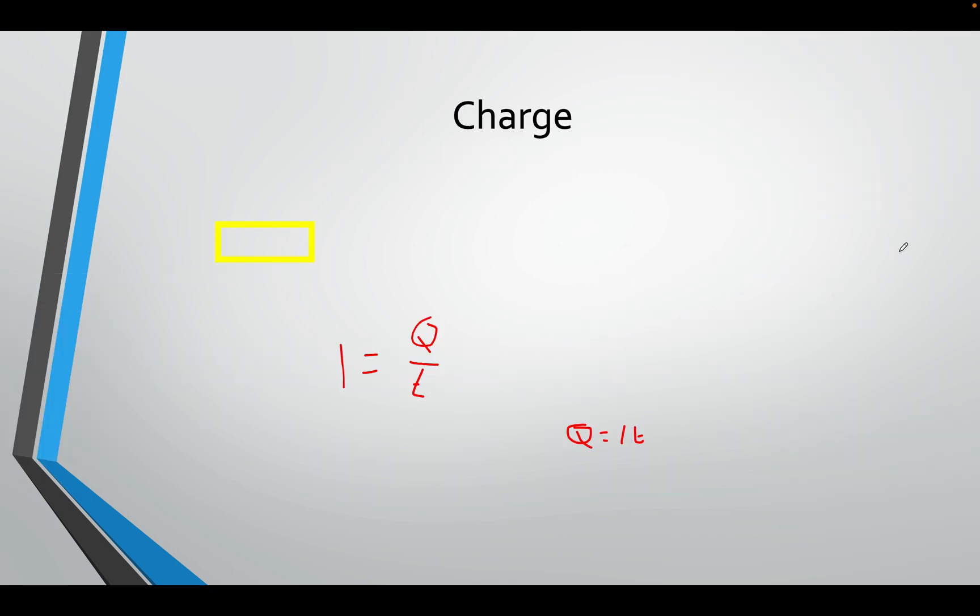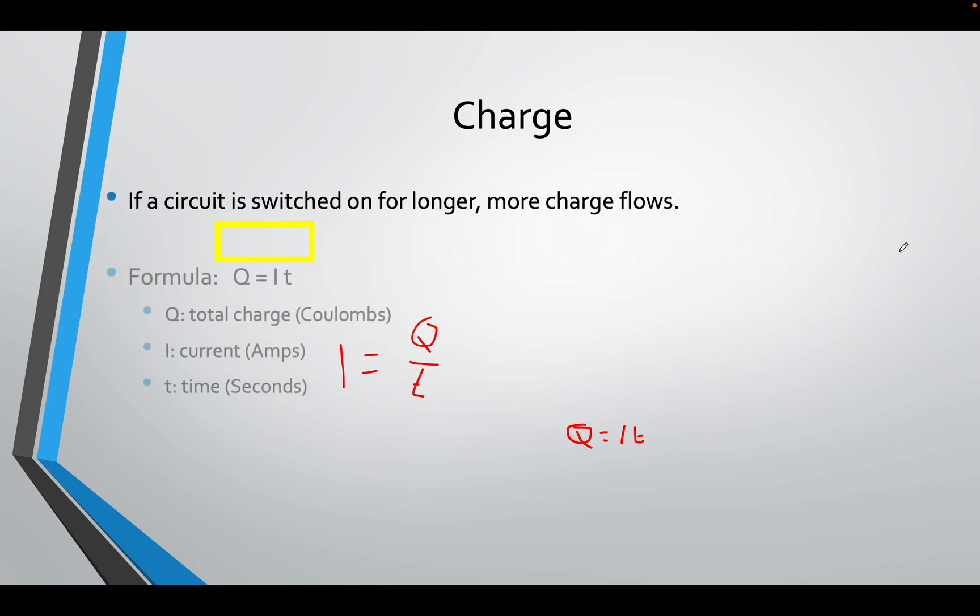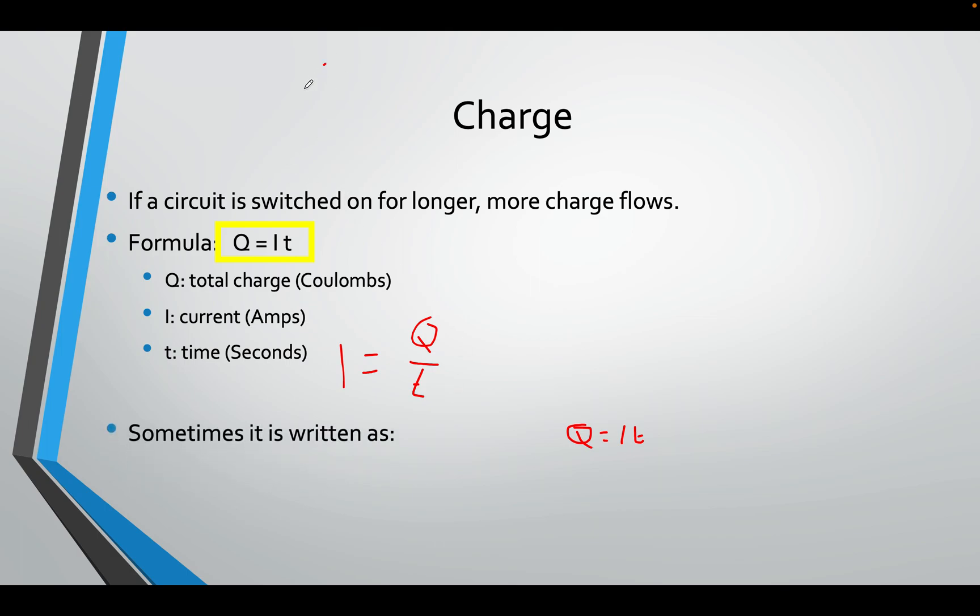If you wanted to calculate the charge, you can do that. You can just use Q equals IT. That's the formula that I say. You can rearrange it to find I, which is Q over T. Makes a little triangle as well. You can have a little triangle if you need to. Q at the top, I and T.